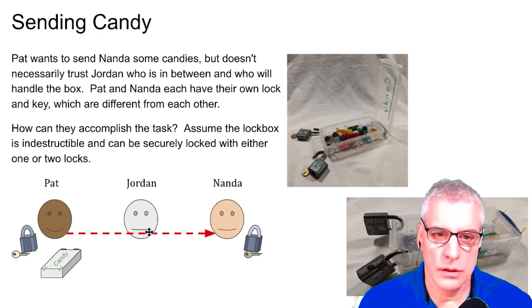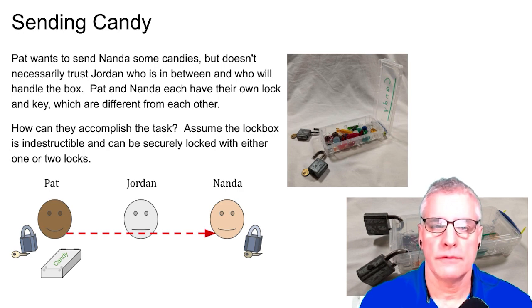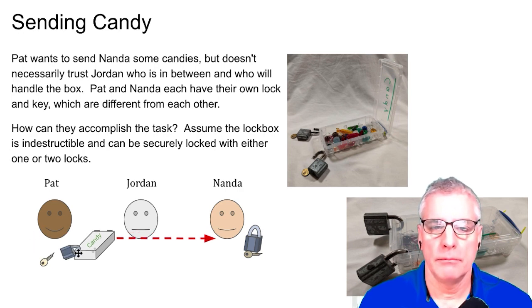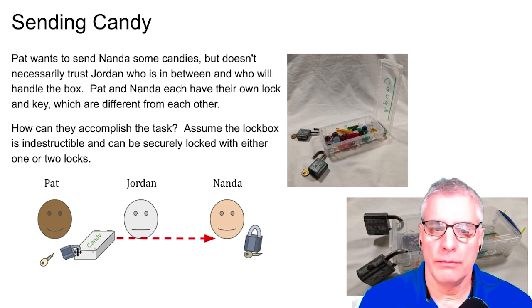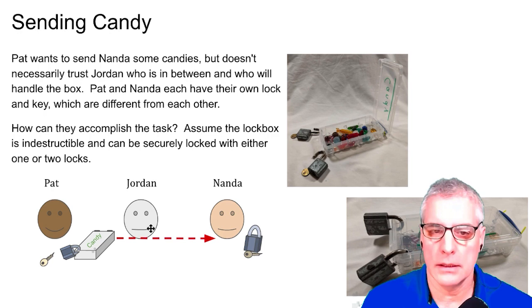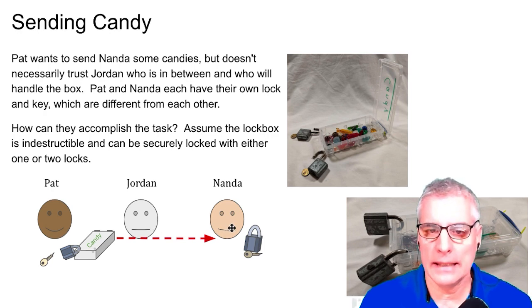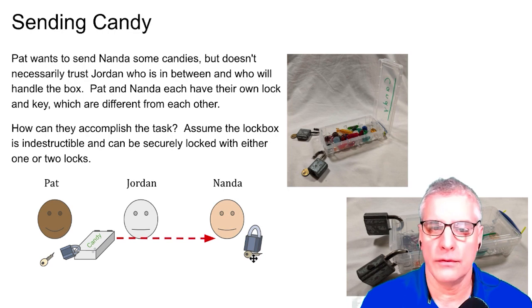One way this could happen would be as follows. First of all, Pat puts a lock on, and there's space for two locks on there. If one or both are on there, Jordan can't open the box. So, Pat locks with Pat's lock and passes the candy across. Jordan sees it, but can't get into it because the lock's there. Nanda gets it. Nanda can't get into it either because it's locked with Pat's lock. And Nanda's key is different from Pat's key.